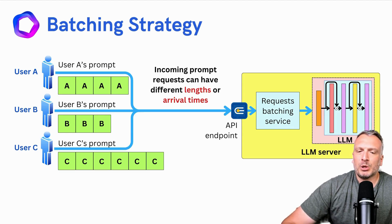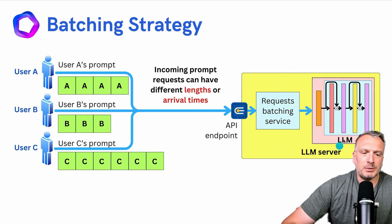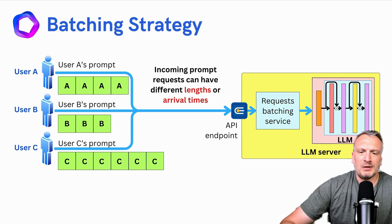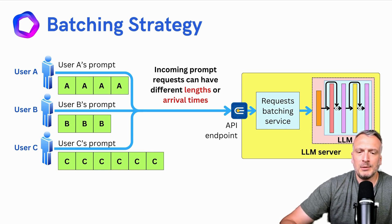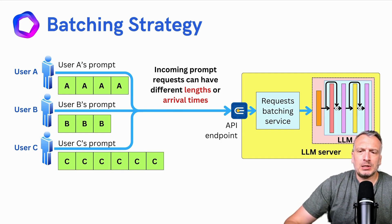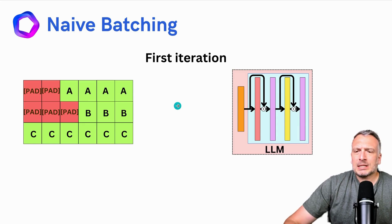Imagine that we have multiple requests from multiple users to the same LLM model server. There are some difficulties related to the input prompt: the input prompt may have different lengths, and they may have different arrival times. So how do we handle those in such a way that the user experience is still good? The typical way to handle that is to batch the different requests together. Let's explore first a very naive batching strategy.